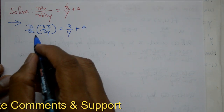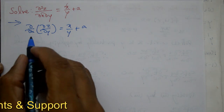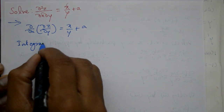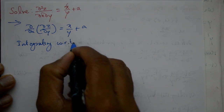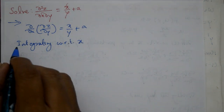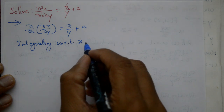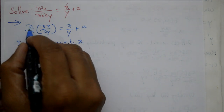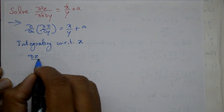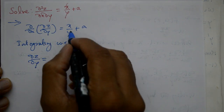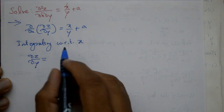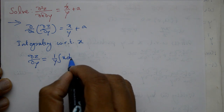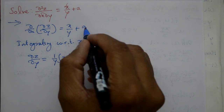After integration, integrating with respect to x karna hai. Y is treated as a constant. So integrating, dz/dy equal to — one/y (y is constant, taken outside) integration of x dx plus a, a is constant, integration of one dx, plus f(y).